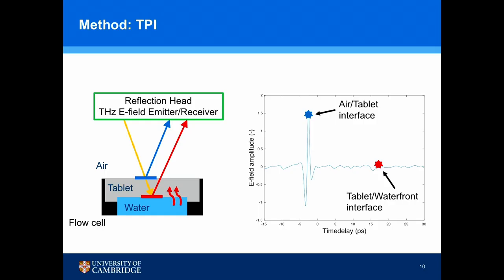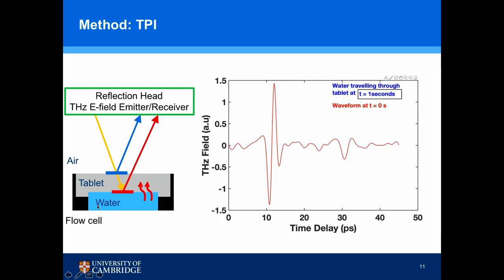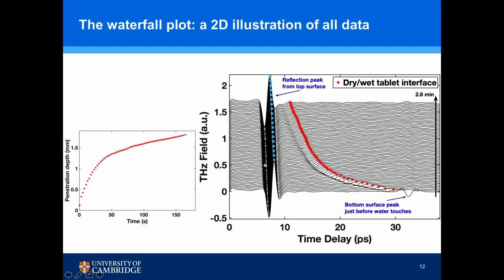As the water travels up penetrating the tablet, the red peak moves to the left, closer to the top. In a live animation, you can see the water peak gradually moving to the left as time goes by. And if we plot all the waveforms together in a 2D waterfall plot, we can clearly see the movement of the water. By tracking this water peak, we can extract kinetics information of liquid penetration.